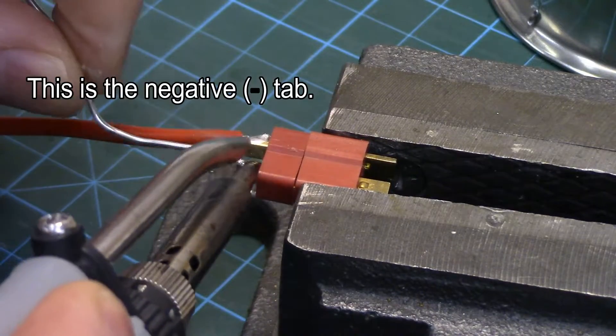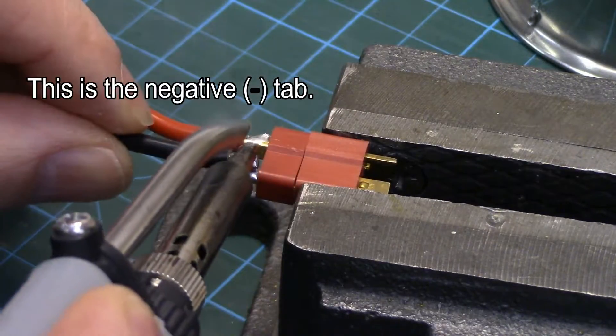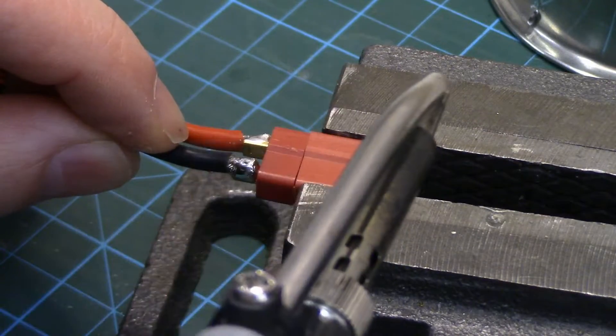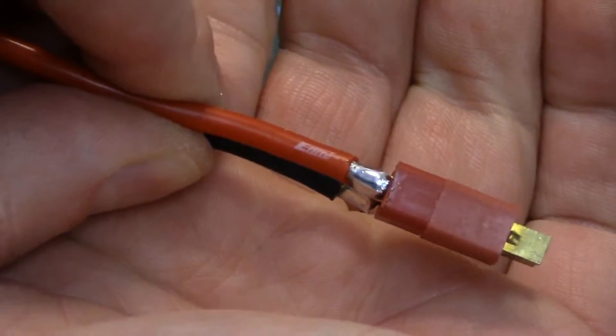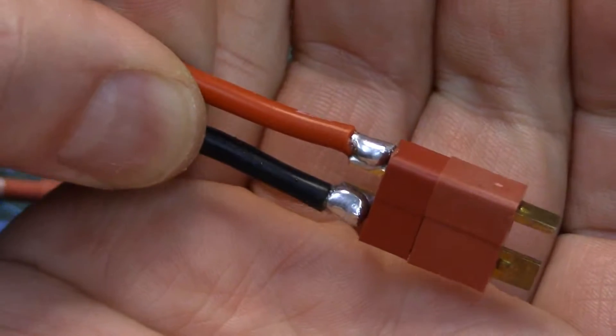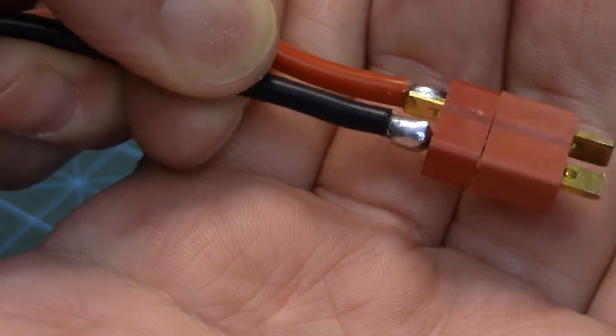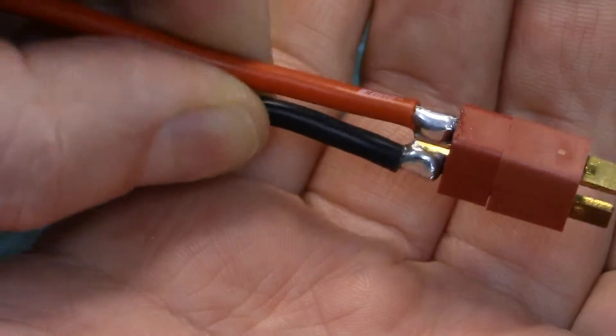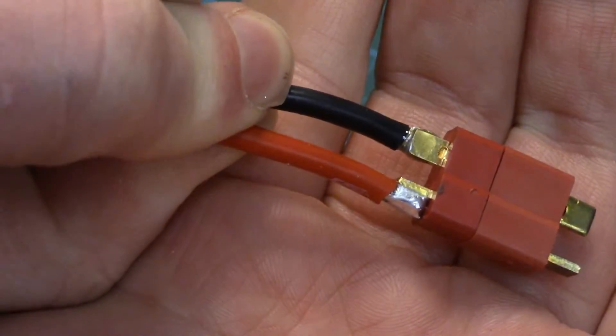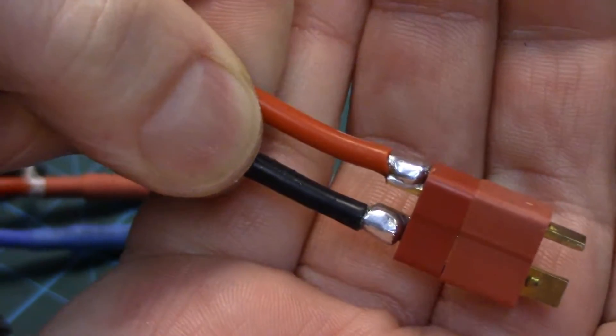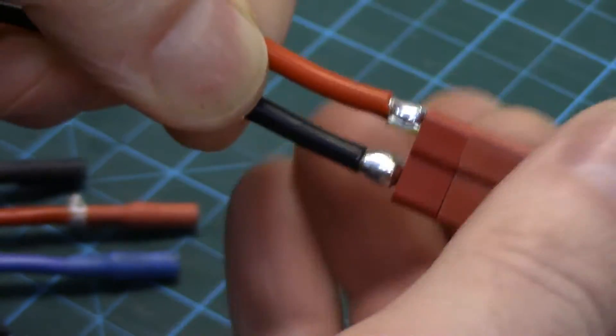So before we put the heat shrink on, I'll show you the connectors up close, the solder job. You don't want solder dripping down or anything, nice silver solder once it cooled, meaning it's not going to be a brittle or a cold solder joint.